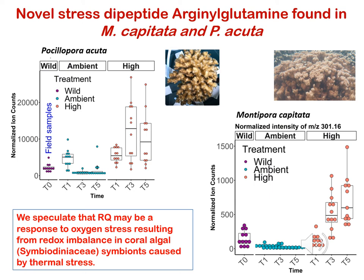We characterized four dipeptides in more detail. The results of Montipora analysis are shown here for the arginyl-glutamine dipeptide, for which we have determined the structure. This dipeptide is present in field samples of both species, shown in the purple filled circles, but also accumulates over time under high temperature stress in both Pocillopora and Montipora. We think that RQ may be a response to oxygen stress resulting from redox imbalance, and this could be a very important marker for coral stress response prior to bleaching.